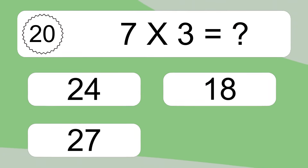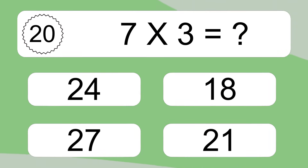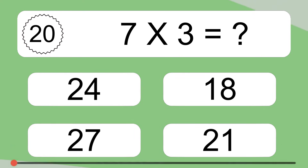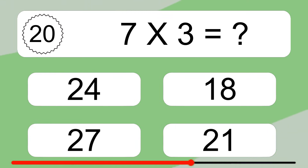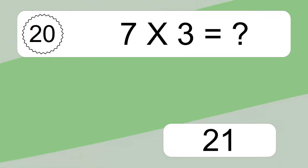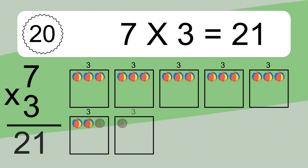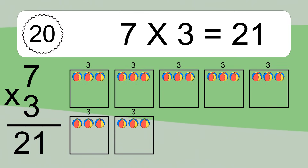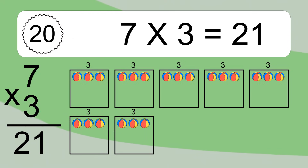7 times 3 equals what? We have 7 boxes and each box has 3 colorful balls inside. If you count all the balls in all the boxes together, you will have 7 times 3 balls. This equals 21 balls.